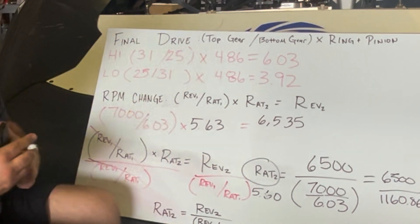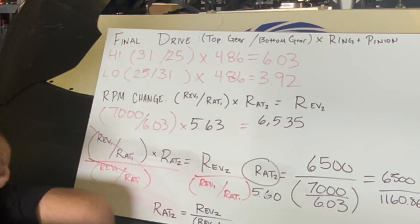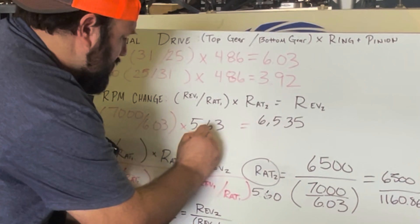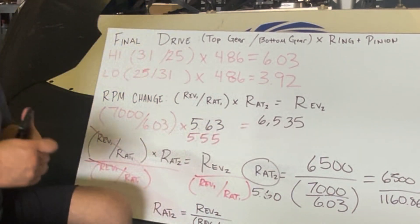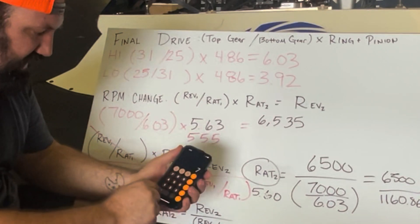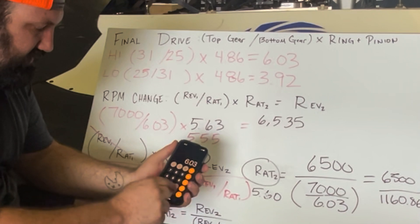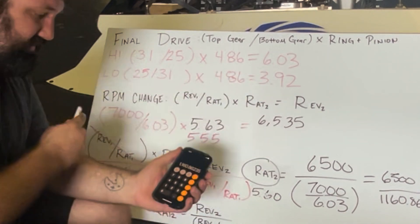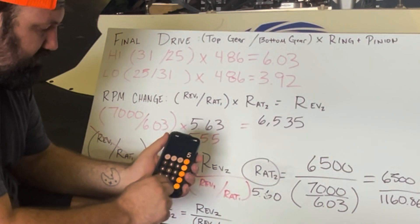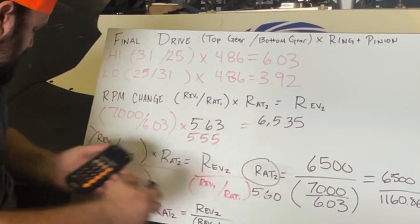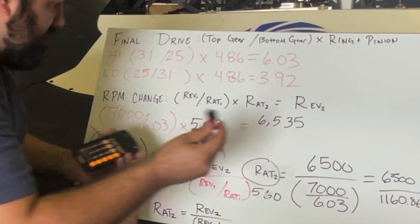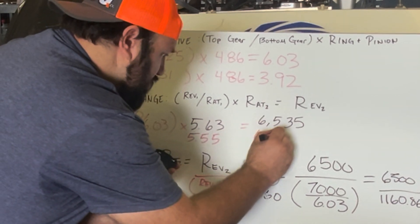If we want to run the lower of the two options, the 5.55, we do the same math. Again, 7,000 divided by 6.03 gives us 1,160.86 — same as before. Times 5.55: just like we suspected, we'd be a little bit under 6,500 RPM — in this case, 6,443 RPM.